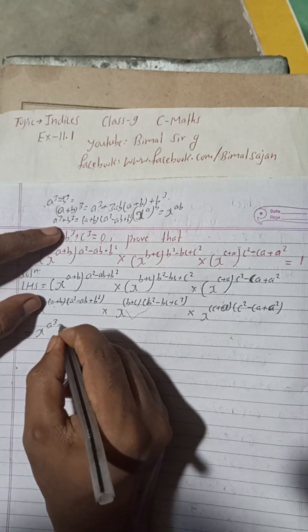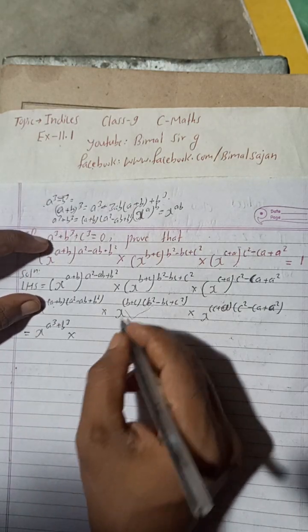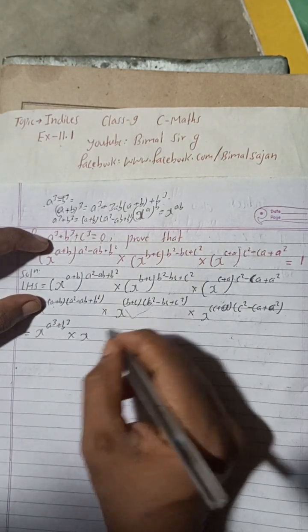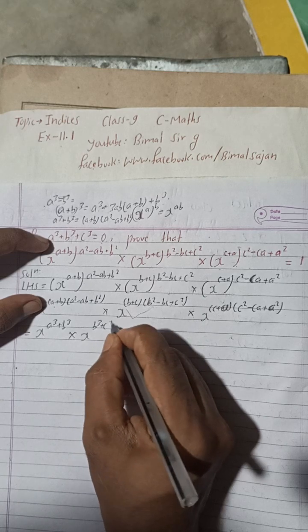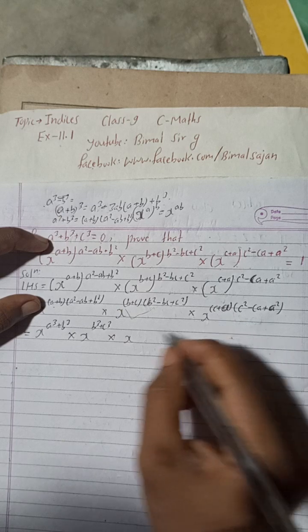We can write here x to the power a³+b³, this is the formula for b³+c³, b³+c³ into this is x, so this is formula for c³+a³.